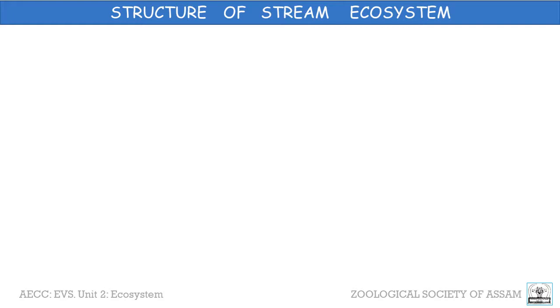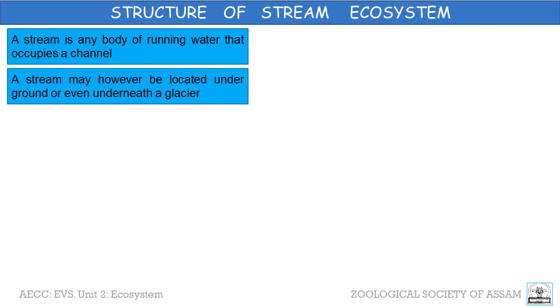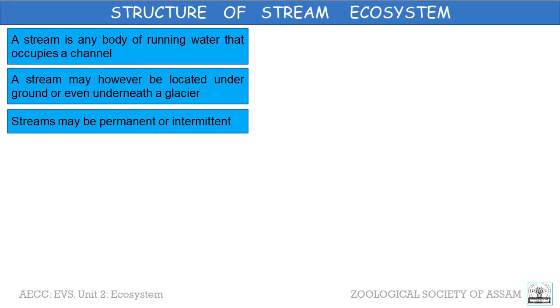A stream is any body of running water that occupies a channel. It is normally above ground, eroding the land that it flows over and depositing sediment as it travels. A stream can, however, be located underground or even underneath a glacier. Streams may be permanent or intermittent.